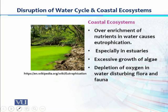These algae consume the dissolved oxygen present in the water body, causing dissolved oxygen levels to drop drastically for aquatic animals, which may even cause the killing of all or part of the life present in that aquatic ecosystem. That is how human activities are disrupting the water cycle and damaging the coastal ecosystem.